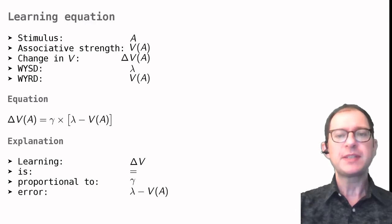The word is translates into the equals symbol. The word proportional to translates into a multiplication by the number gamma. Finally, the error is the difference between the WYSD and the WYRD.